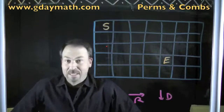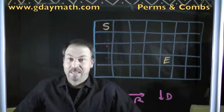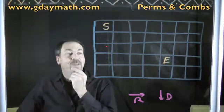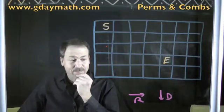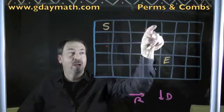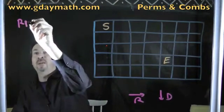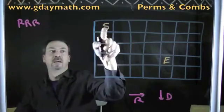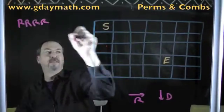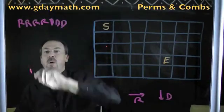I could just start listing paths, but that would be awfully tedious. So is there a clever way? Well, I've kind of given something away — I've got R's and D's. I could encode that journey as: right, right, right, right, down, down, down — four rights followed by three downs. So there's one possible journey encoded as a word.